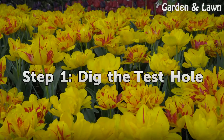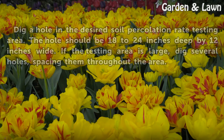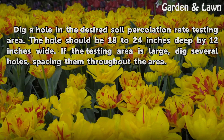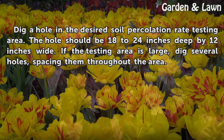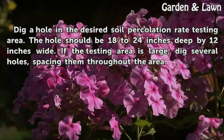Step 1: Dig the test hole. Dig a hole in the desired soil percolation rate testing area. The hole should be 18 to 24 inches deep by 12 inches wide. If the testing area is large, dig several holes, spacing them throughout the area.